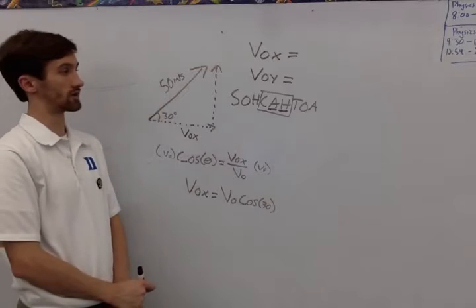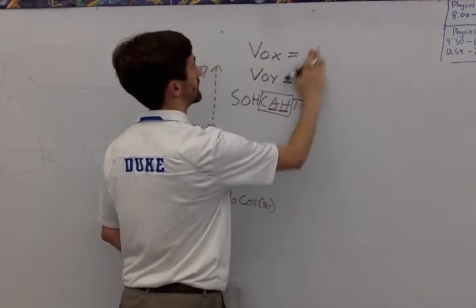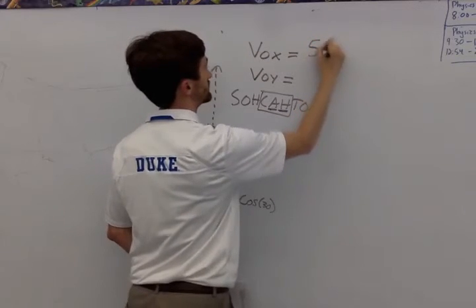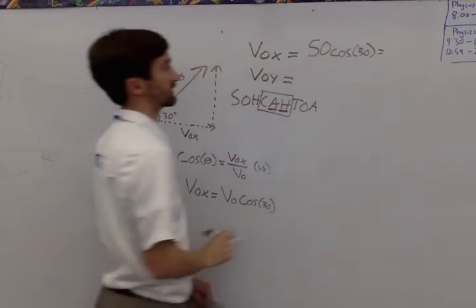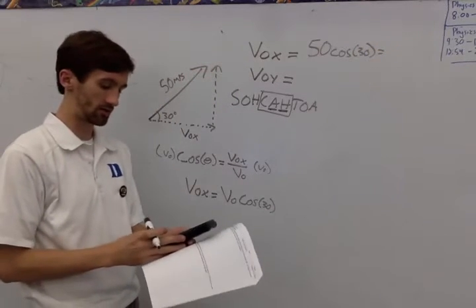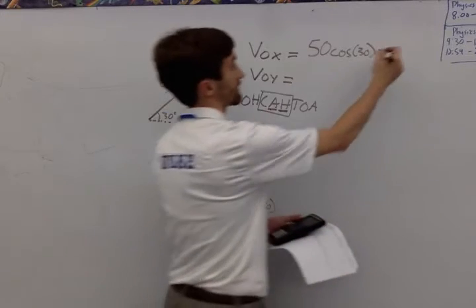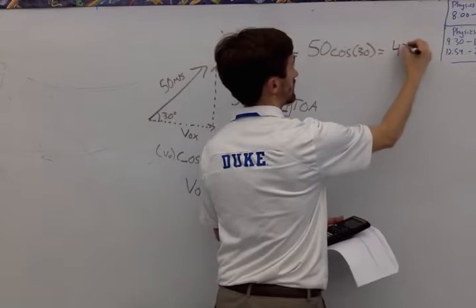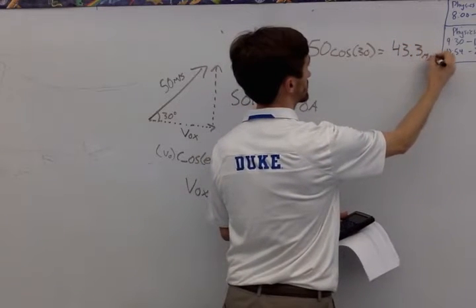I get initial velocity in the x direction is equal to the total initial velocity times the cosine of the angle, which is 30. So I'm going to write 50 times the cosine of 30. And when I type that into my calculator, I get 43.3 meters per second.